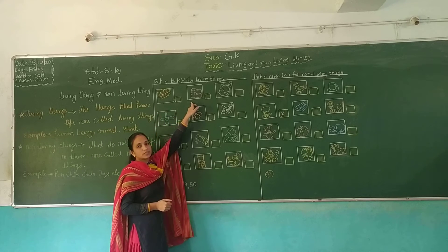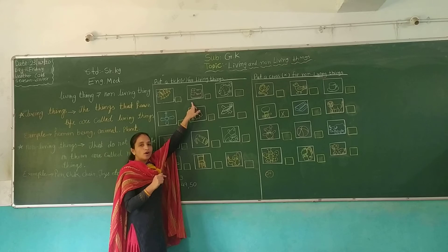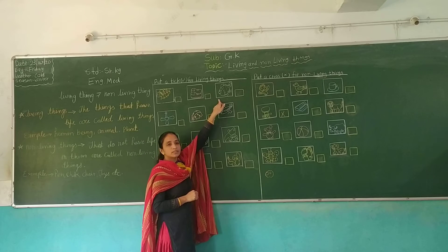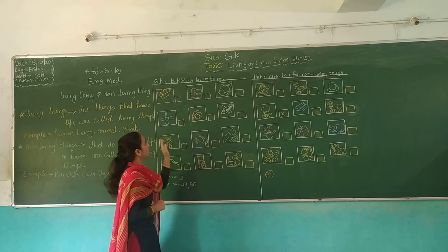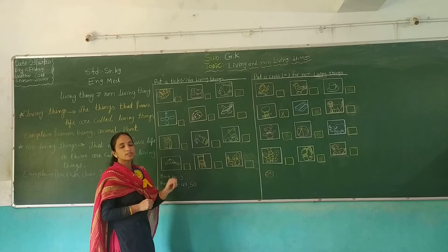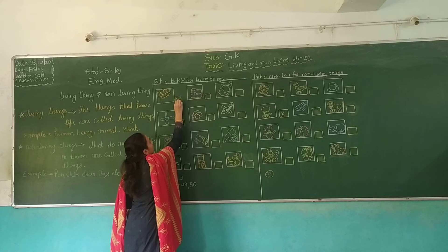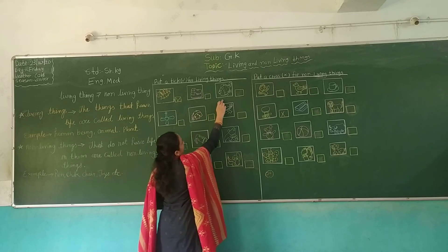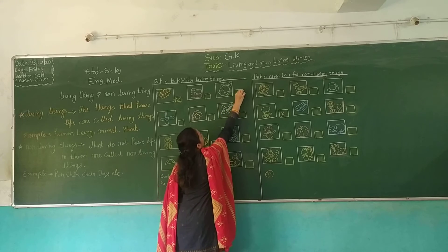Which picture is this? Shoes. Shoes is a non-living thing. And next, which picture is this? Fish. Fish is a living thing. So among these three pictures, butterfly and fish are living things — put a tick in their boxes.